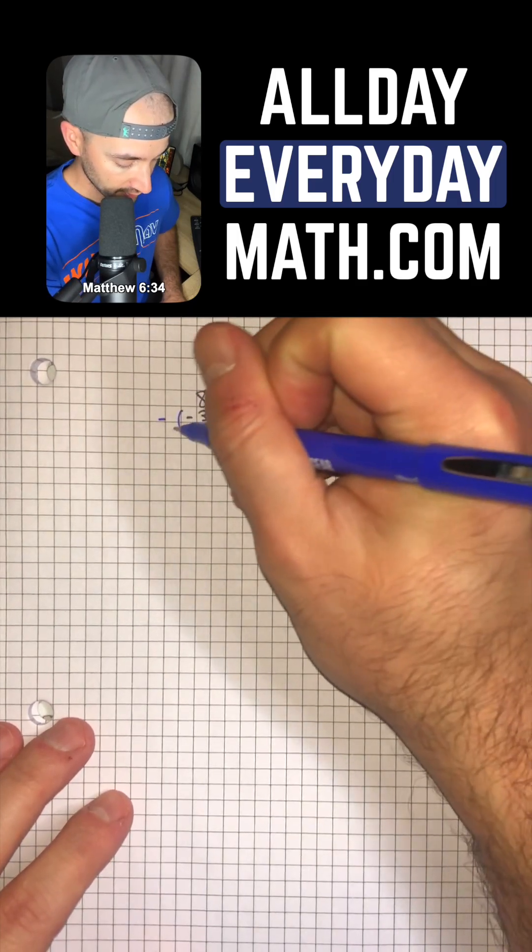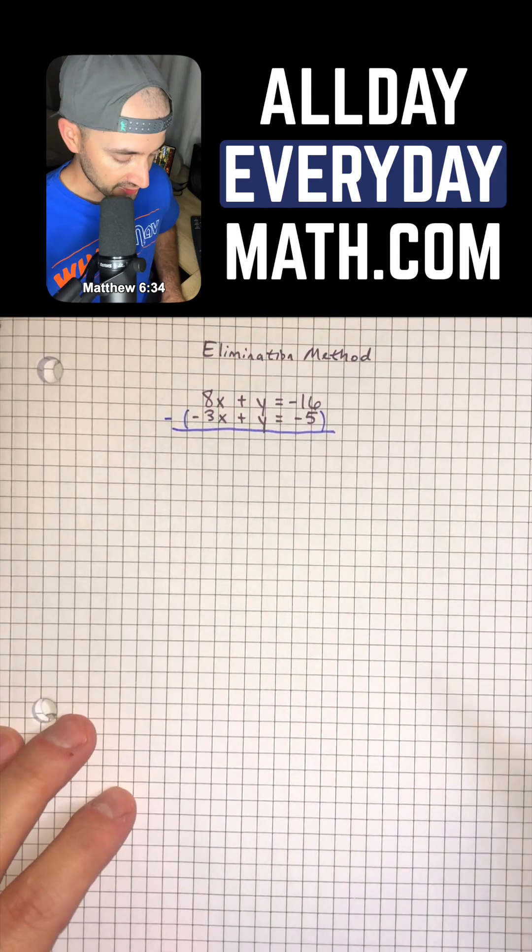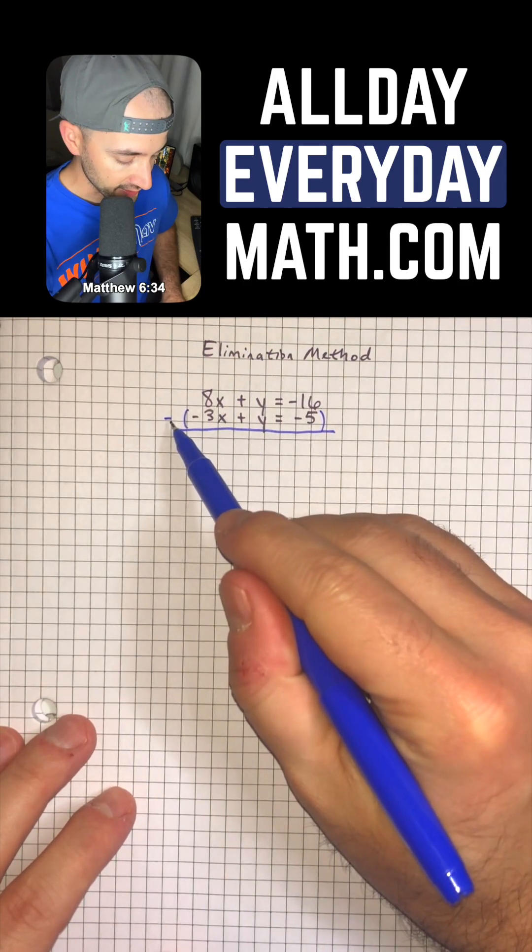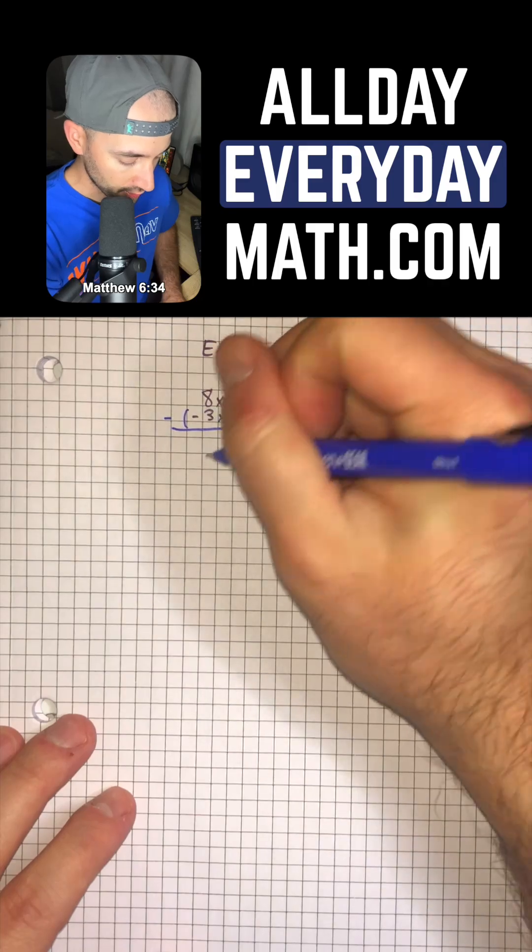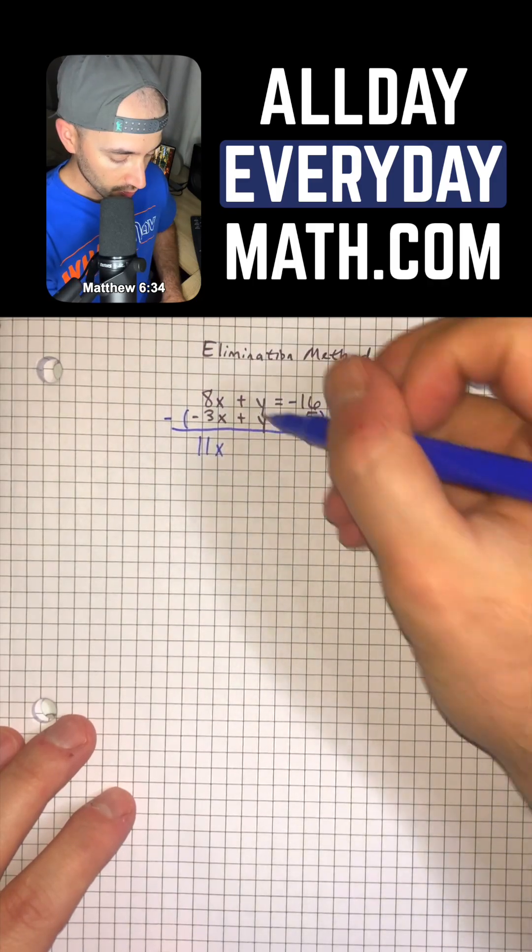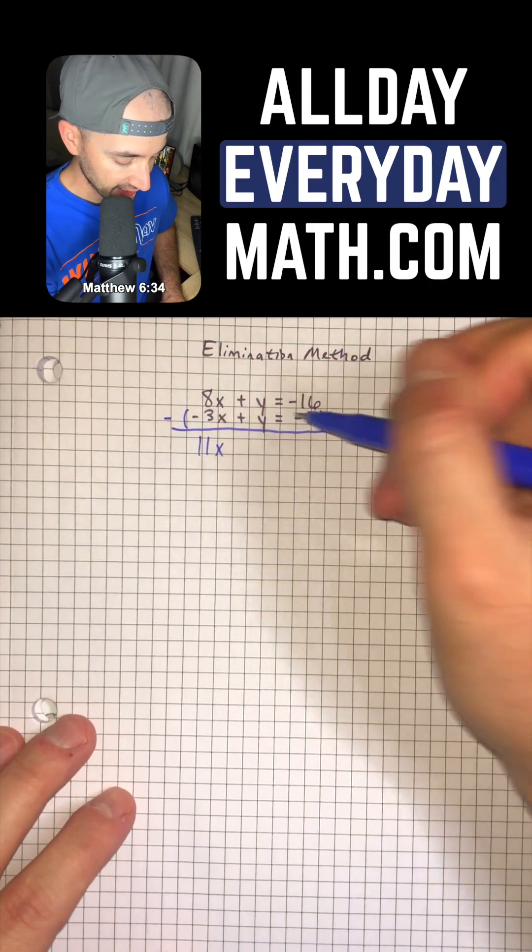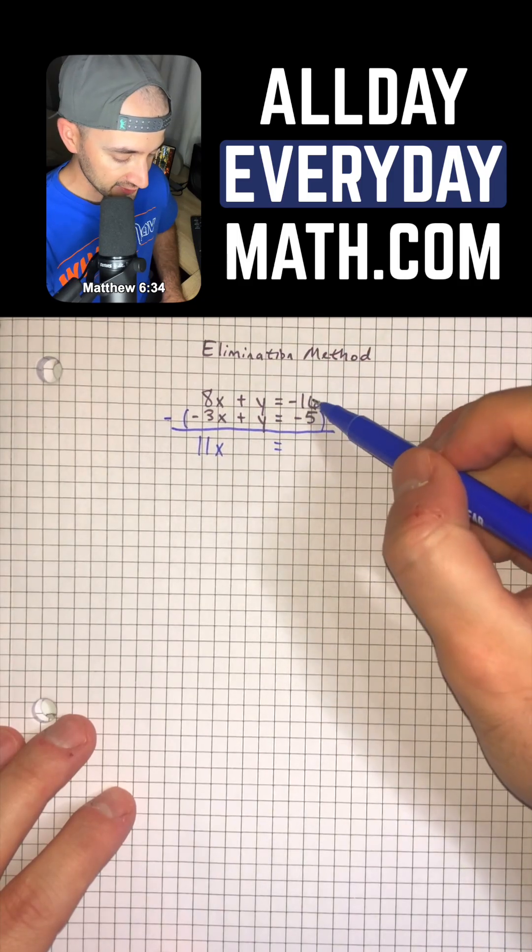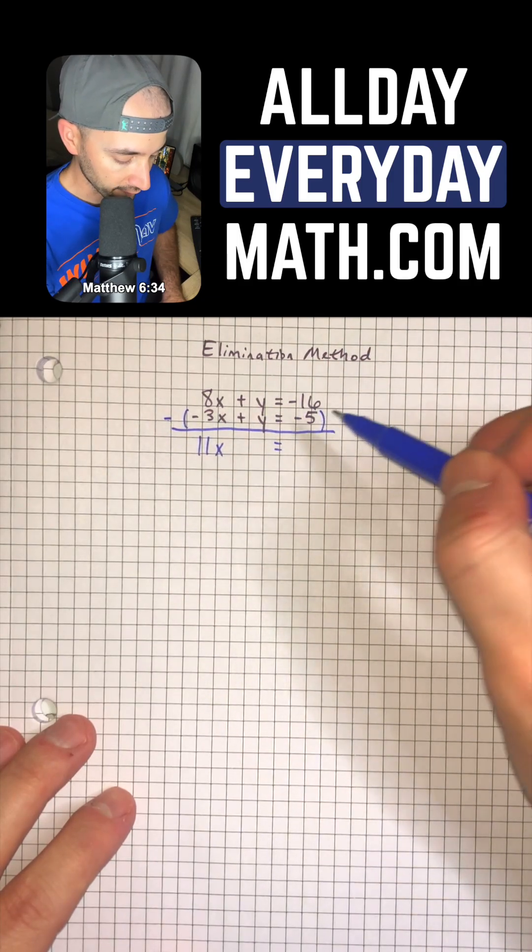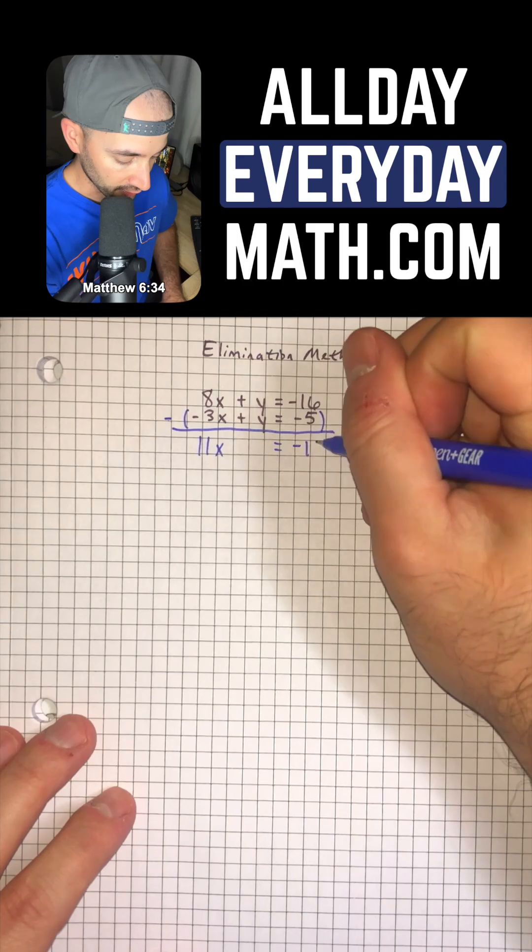we can subtract the two equations. And so that's going to give us 8x minus negative 3x, which is positive 11x. y minus y just cancels. And then that's going to be equal to negative 16 minus negative 5, which is negative 11.